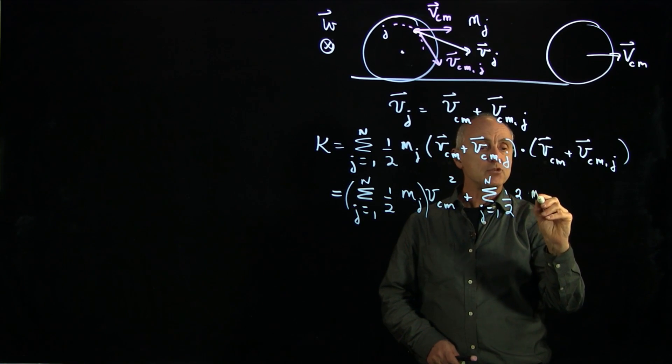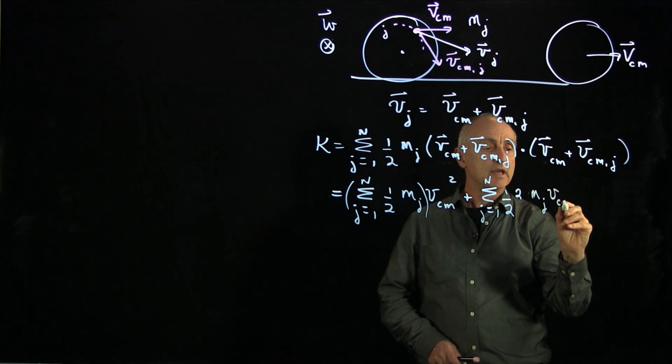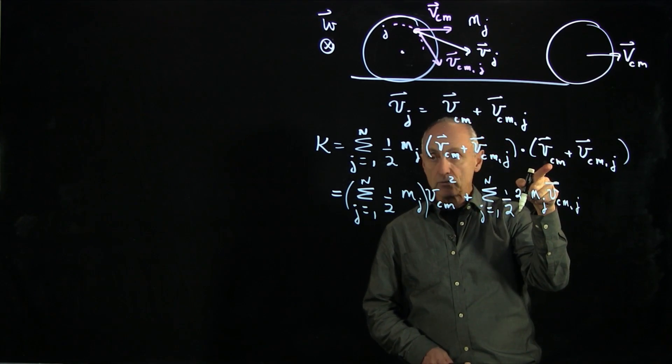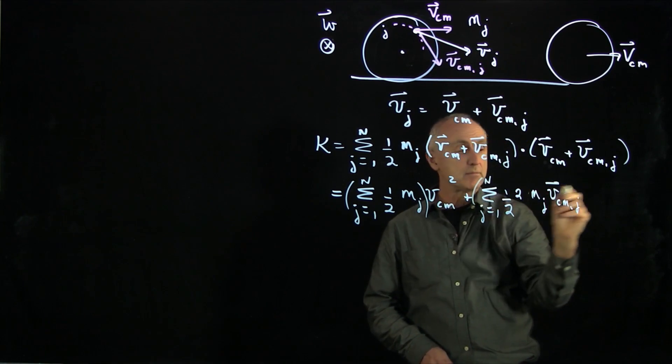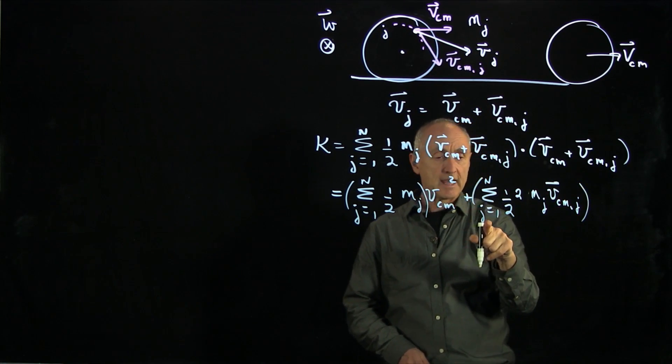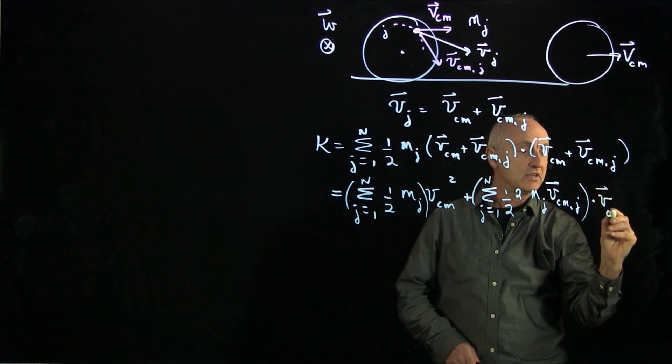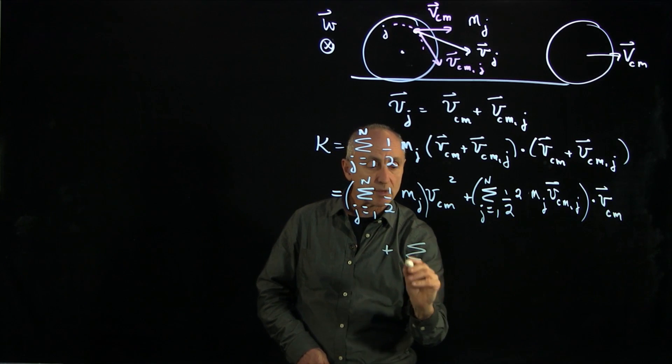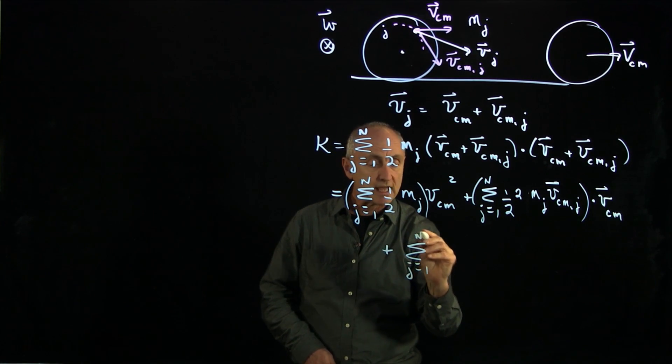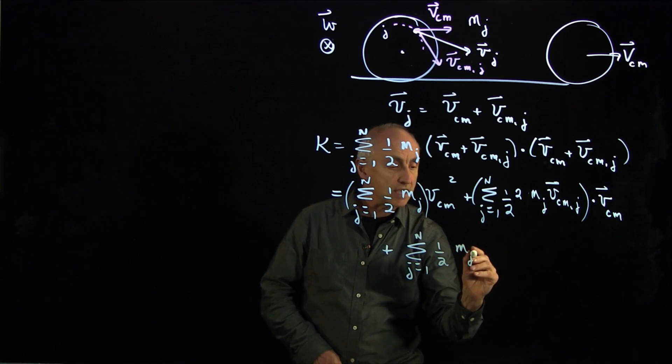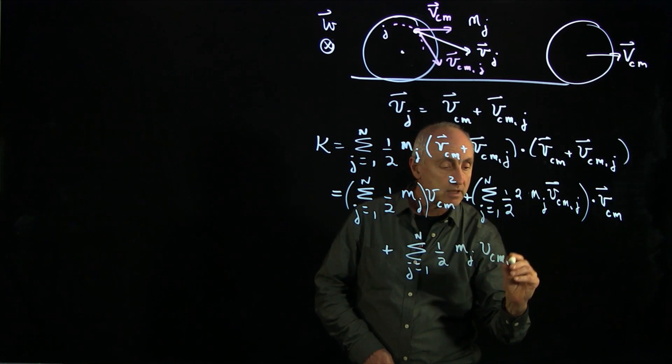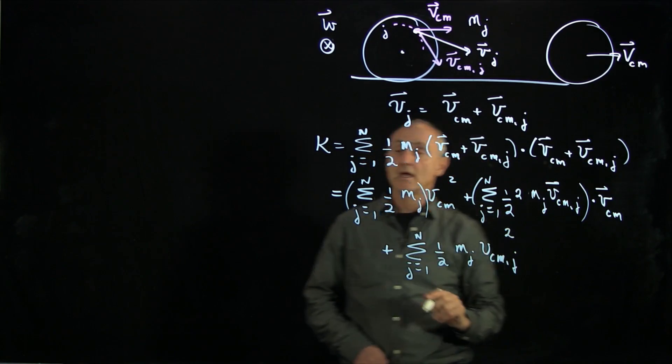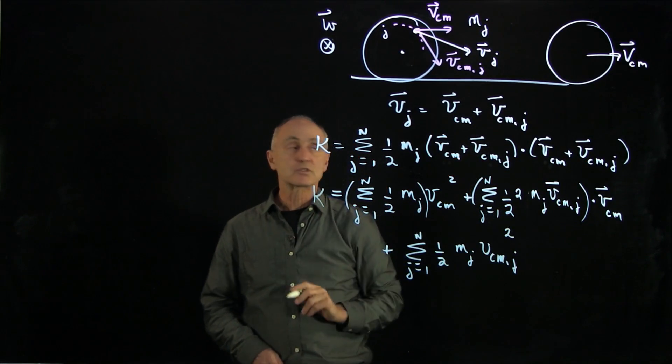Now, I'm going to write it as mj vcmj vector. Now, remember, when you dot with vcm, every single point has the same vcm. Every j-th element has the same vcm. So I can pull that vcm outside. And finally, I have the last term, which is the sum over j from 1 to n of 1/2 mj vcmj squared. And that's just the dot product of those two terms. And so our kinetic energy looks rather complicated.